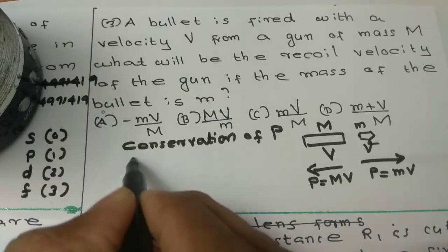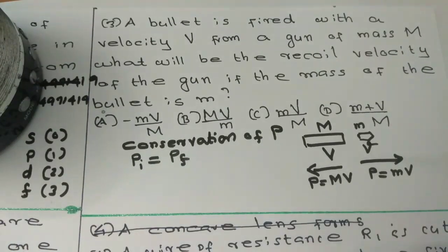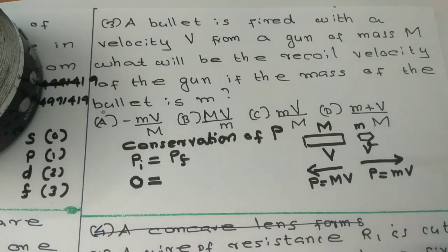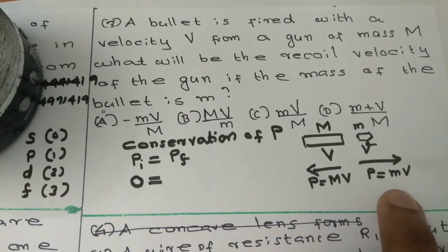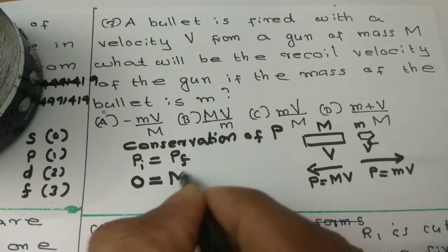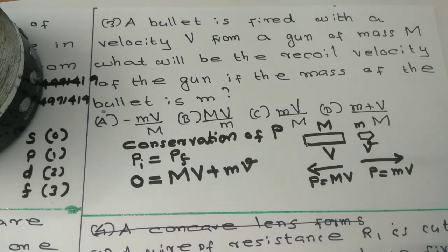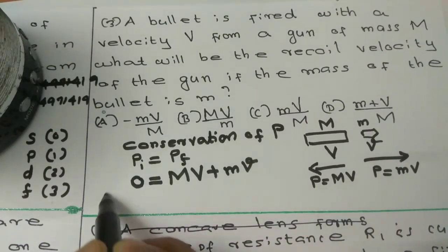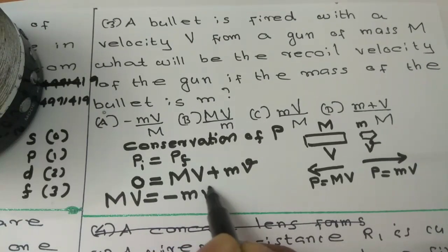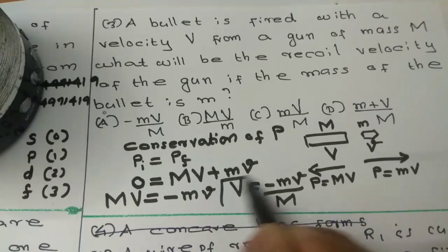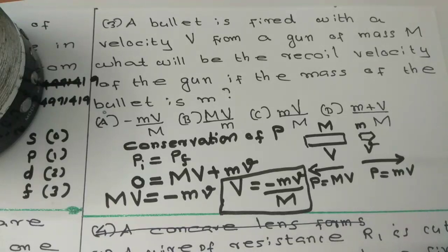For conservation of momentum, initial momentum is equal to final momentum. The final momentum includes the bullet's momentum and the gun's momentum. So: 0 equals capital M into capital V plus small m into small v. Rearranging: M into V equals minus small m into small v. Therefore, capital V equals minus (small m × small v) divided by capital M.